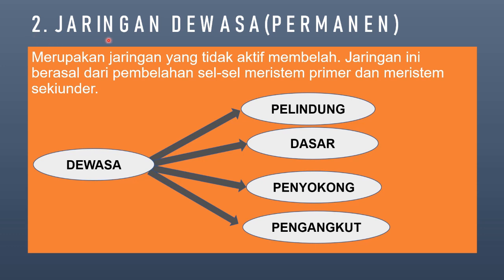Jaringan yang kedua yaitu jaringan dewasa atau sering disebut dengan jaringan permanen. Jaringan dewasa merupakan jaringan yang tidak aktif membelah. Jaringan ini berasal dari pembelahan sel-sel meristem primer dan meristem sekunder. Jadi hasil dari pembelahan meristem primer tadilah yang menyebabkan munculnya jaringan dewasa, yang terdiri dari jaringan pelindung, jaringan dasar, jaringan penyokong, maupun jaringan pengangkut.